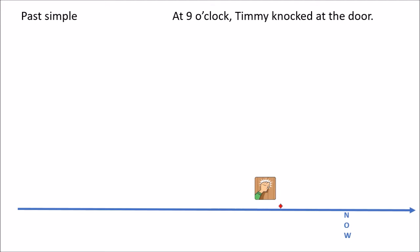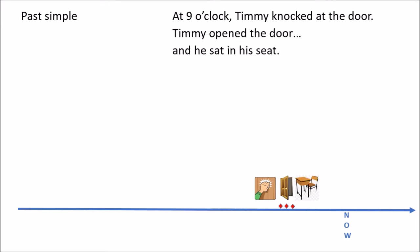Yesterday at nine o'clock, Timmy knocked at the door, Timmy opened the door, and he sat in his seat. The past simple is used when you want to add one action after another which is situated in the past. So apparently Timmy was late and he had to open the door and get to his seat.